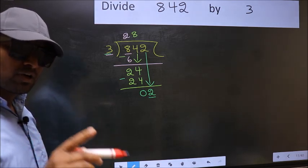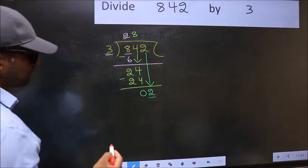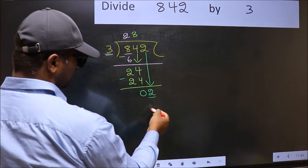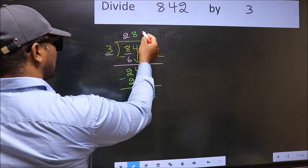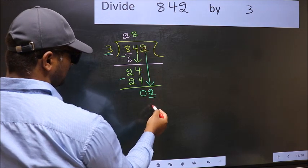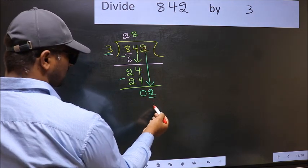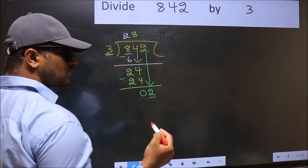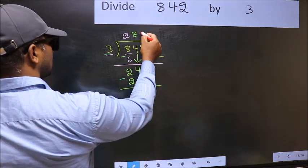Instead, what you should think of doing is, what number should be right here? If I take 1 here, I will get 3. But 3 is larger than 2. So what we should do is we should take 0.